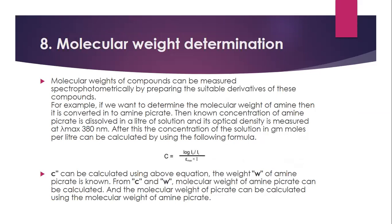Molecular weight determination can also be done by UV visible spectroscopy. For example, to determine the molecular weight of an amine, it is converted to amine picrate. A known concentration of amine picrate is dissolved in a liter of solution and its optical density is measured at lambda max 380 nanometers. The concentration of the solution in gram-moles per liter can then be calculated using the Beer-Lambert formula. Since the weight of amine picrate is known, the molecular weight of amine picrate can be calculated, and from that the molecular weight of the amine can be derived.